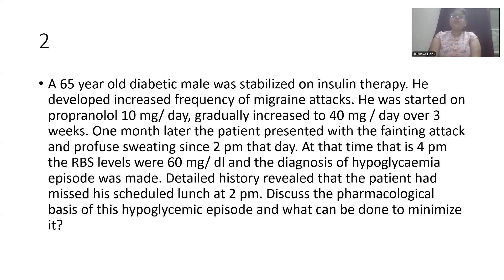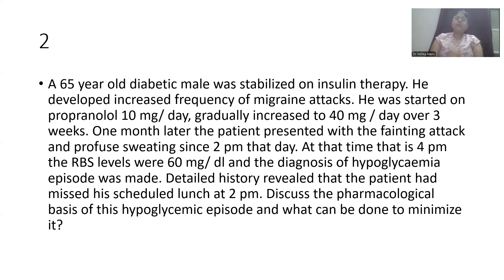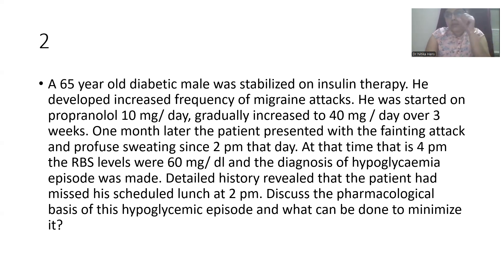A 65-year-old diabetic male was stabilized on insulin therapy. He developed increased frequency of migraine attacks and was started on propranolol 10mg per day, gradually increased to 40mg per day over three weeks. One month later, the patient presented with a fainting attack and profuse sweating. Since he had missed his scheduled lunch at 2 pm, his random blood sugar at 4 pm was 60mg per deciliter — indicating hypoglycemia. The question is: discuss the pharmacological basis of this hypoglycemic episode and what can be done to minimize it.